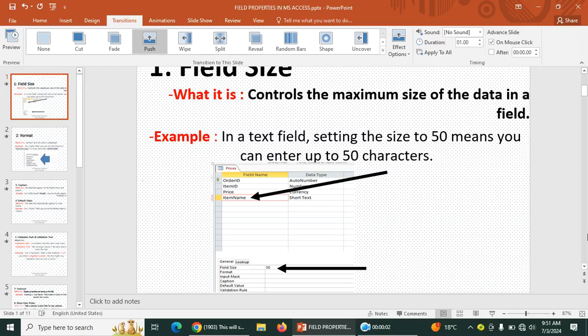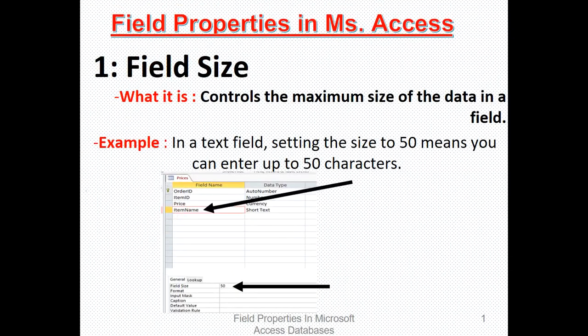Hello, I want us to look at field properties in Microsoft Access database. Apart from data types, we usually have more elaborate features that should be included in the database design. We have field properties, which are the characteristics or expansion of what should be contained in the fields.